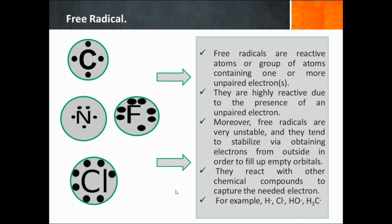Free radicals are reactive atoms or groups of atoms containing one or more unpaired electrons. They are highly reactive due to the presence of an unpaired electron. Free radicals are very unstable and tend to stabilize by obtaining electrons from outside in order to fill up empty orbitals. They react with other chemical compounds to capture the required electron. Examples: hydrogen free radical, chlorine free radical, OH group free radical, methyl group free radical. Other examples: carbon with unpaired electrons, nitrogen with three unpaired electrons, chlorine with one unpaired electron.